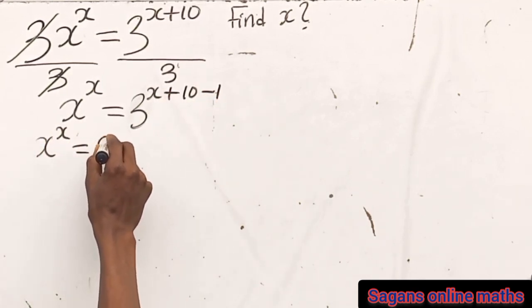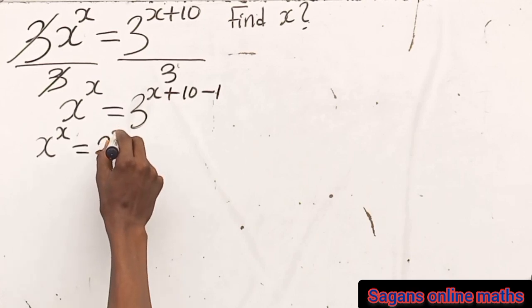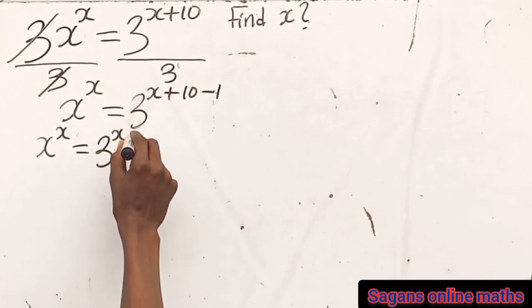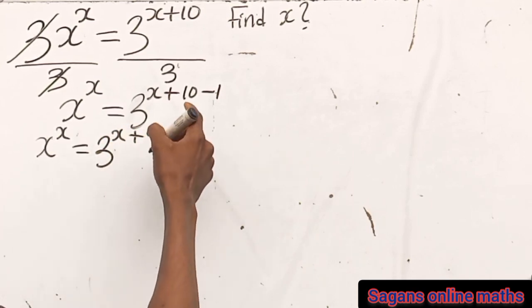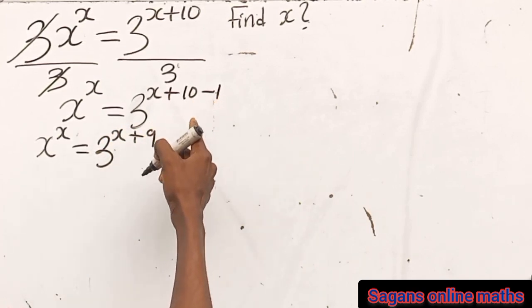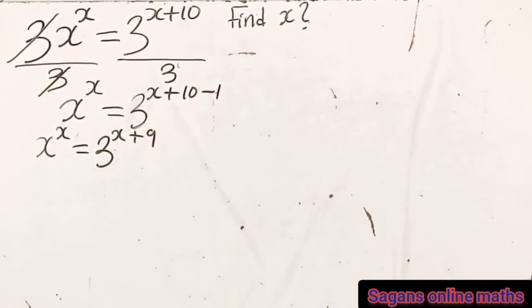So this gives us s to the power of x equals 3 raised to the power of x plus 9, because 10 minus 1 is 9. Now what are we going to do here?